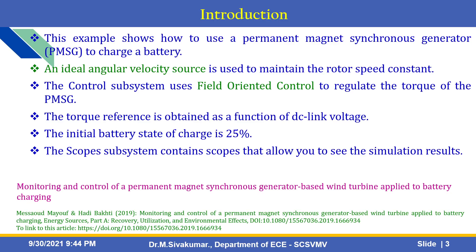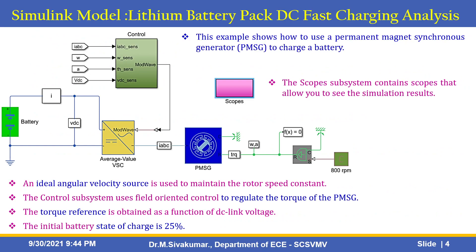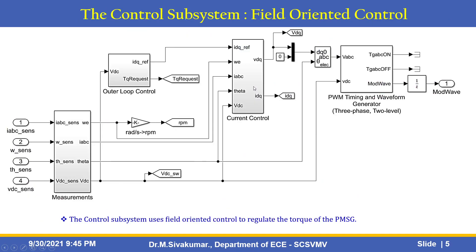Here is the Simulink model — a lithium battery charges using the permanent magnet synchronous generator. This model's control system uses field-oriented control to regulate the torque of the PMSG, and the torque reference is obtained as a function of DC link voltage. The scopes blocks allow you to see the simulation results. This is the control subsystem of the field-oriented control, containing measurement blocks, outer loop control, current control loop, and a PWM waveform generator — a three-phase, two-level waveform generator.